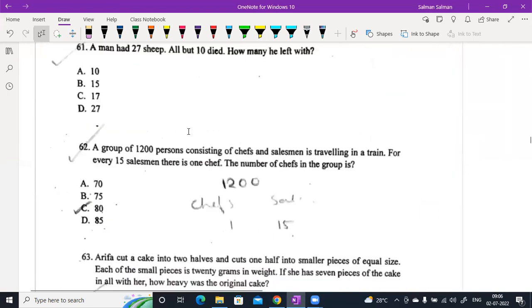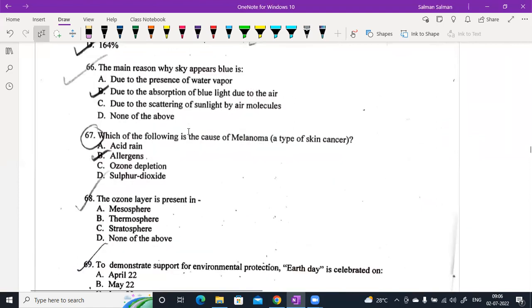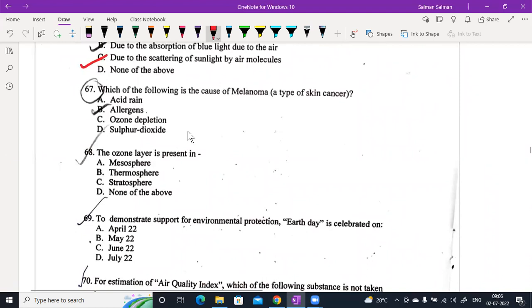So, health and environment question number 65, we will start with 66. The main reason why the sky appears blue is due to the scattering of sunlight by air molecules. Which of the following is the cause of melanoma? It is ozone depletion. Ozone layer is present in which sphere? It is in stratosphere.